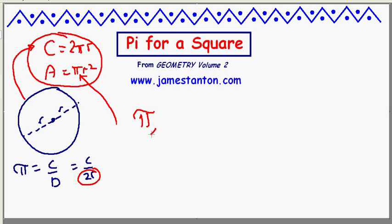We defined pi for a regular triangle, pi for a square. You could do pi for a pentagon, regular pentagon, and pi for a regular hexagon, and so on. Actually work out those values.